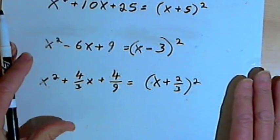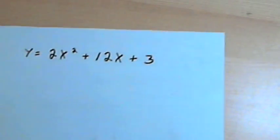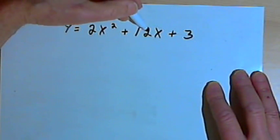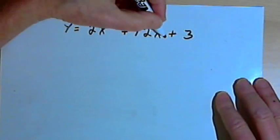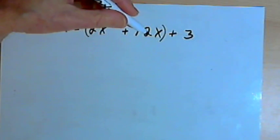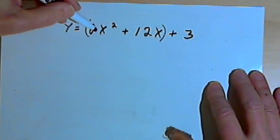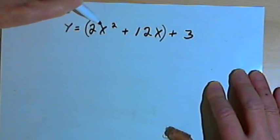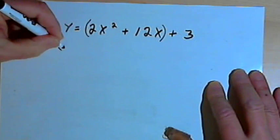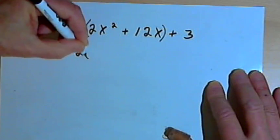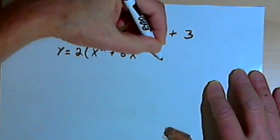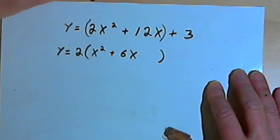So bearing all that in mind, here's how we do completing the square. I've got this problem: y equals 2x squared plus 12x plus 3. The first thing I'm going to do is put parentheses around the first two terms, the 2x squared plus 12x. Then I want to factor what I have in parentheses so that the x squared just has a coefficient of 1. That means I'm going to rewrite this as y equals 2 times the expression x squared plus 6x, leaving a little room, close the parentheses, plus 3.